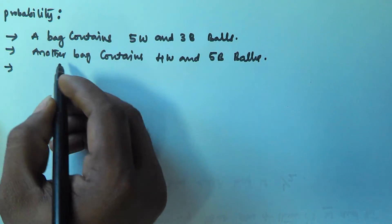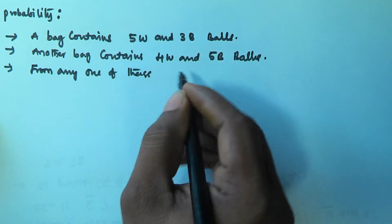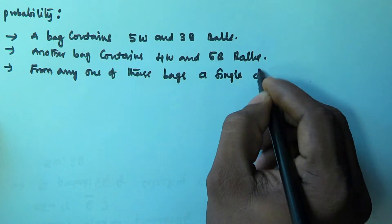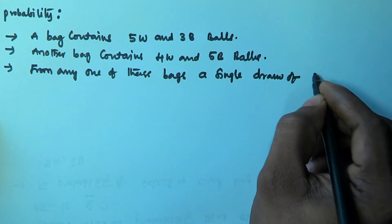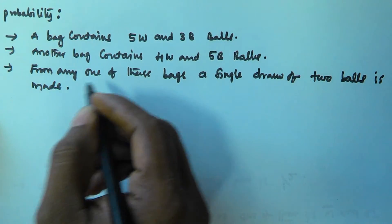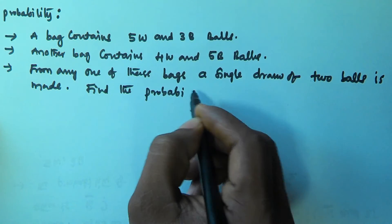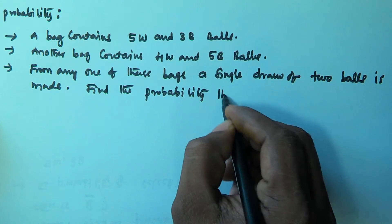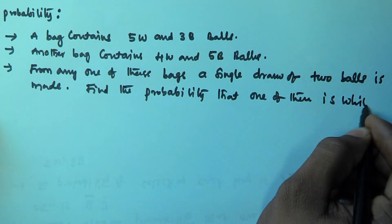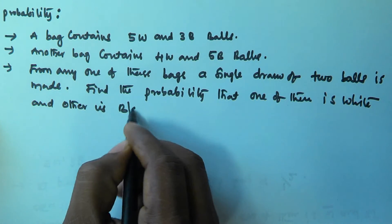From any one of these 2 bags, a single draw of 2 balls is made. We have to find the probability that one of them is white and the other is black.